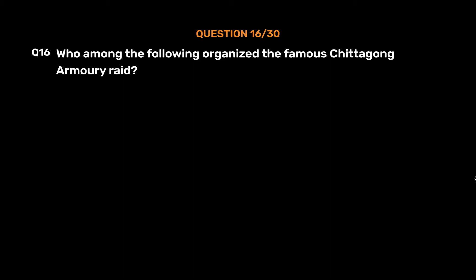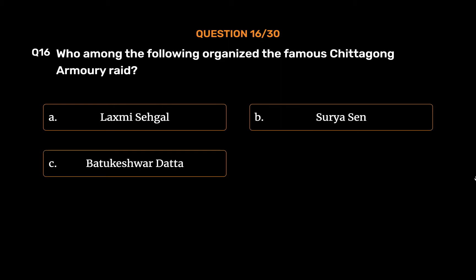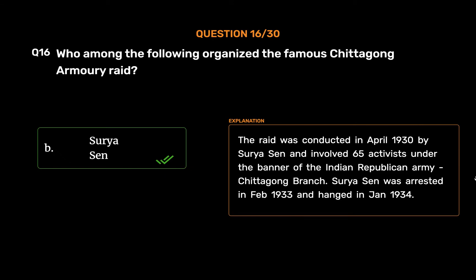Question No. 16. Who among the following organized the famous Chittagong Armory Raid? Option A: Lakshmi Sahgal. Option B: Surya Sen. Option C: Batukeshwar Datta. Option D: J.M. Sengupta. The correct answer is Option B: Surya Sen. The raid was conducted in April 1930 by Surya Sen and involved 65 activists under the banner of the Indian Republican Army, Chittagong branch. Surya Sen was arrested in February 1933 and hanged in January 1934.